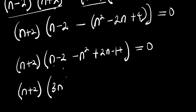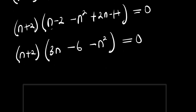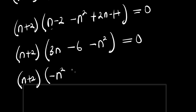So we have 3n, minus 2, minus 4 — that is minus 6 — and we have minus n², and this equals 0. So from here: (n + 2)(-n² + 3n - 6) = 0.